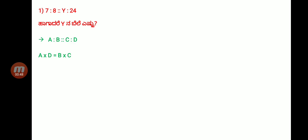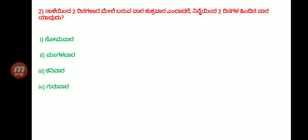This cross-multiplication formula applies here. So, if you want to use that formula, 7 into 24 equals 8 into Y. So 7 into 24 equals 8 into Y. That gives 21 divided by 8, then you get the balance — Y equals 21.